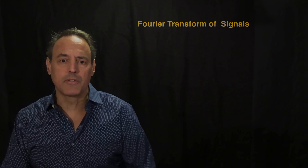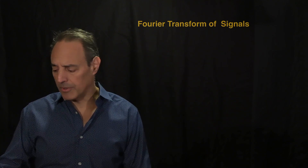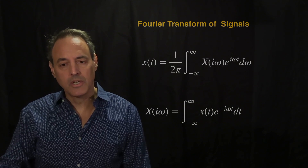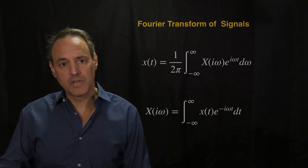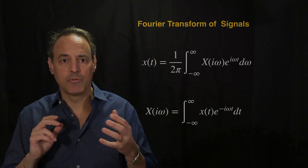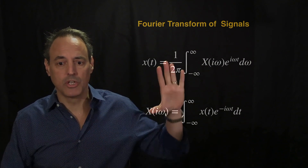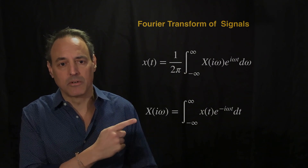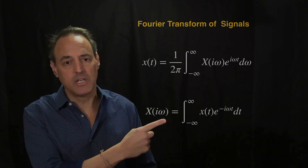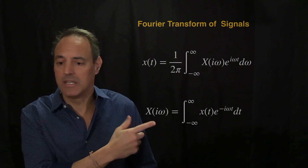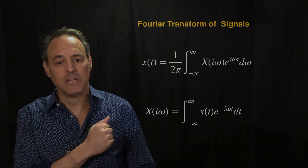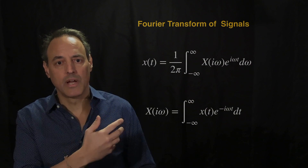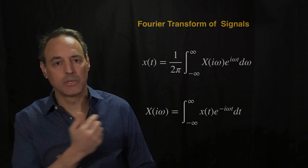Let's look at the Fourier transform of signals. It's an infinite-dimensional representation where we integrate over all of time or all of frequencies to get back and forth between the time and frequency representation. If I want to move into the frequency domain, I take my signal x(t), multiply it against e to the minus i omega t, and integrate over all of time. This gives me X(iω), which is what the signal looks like at a continuum of frequencies.